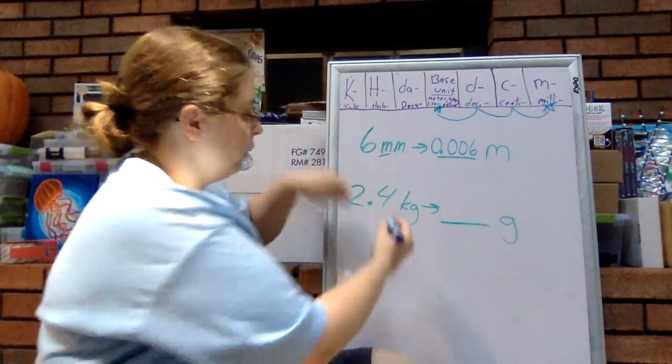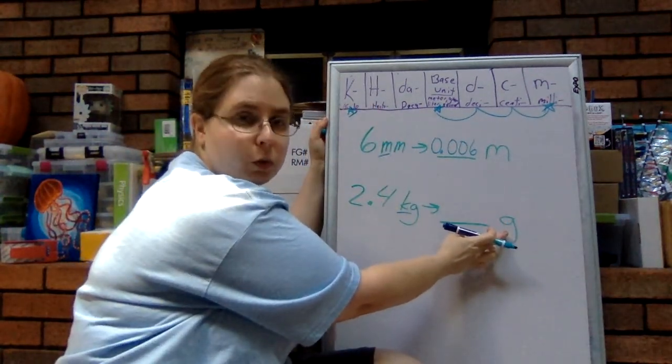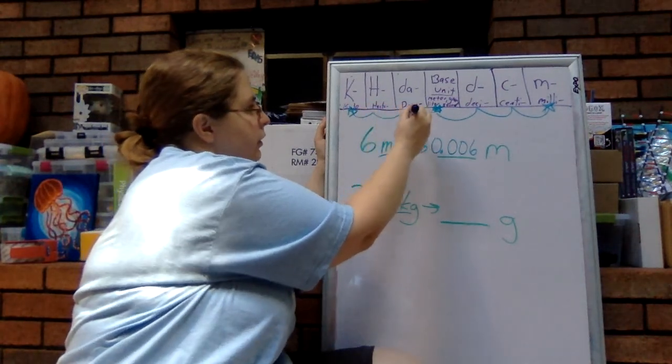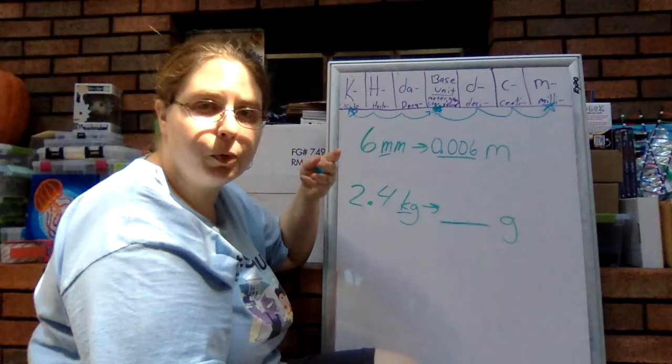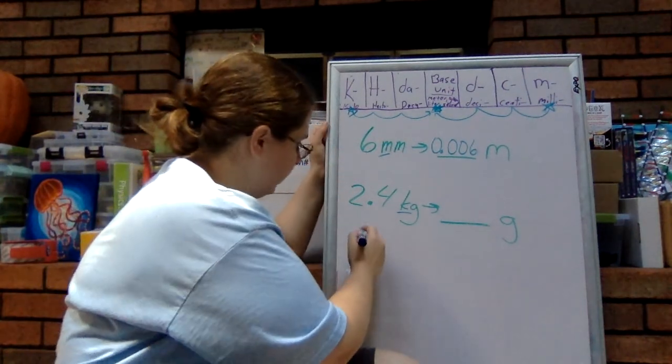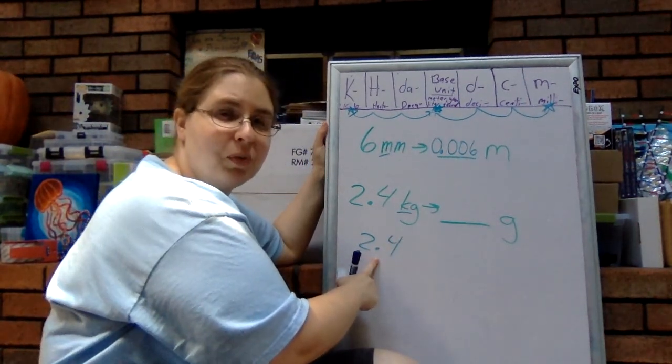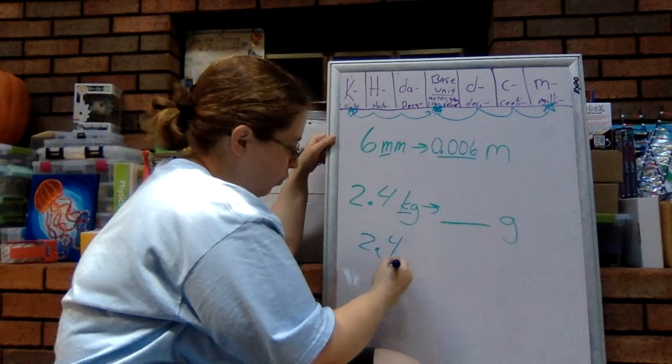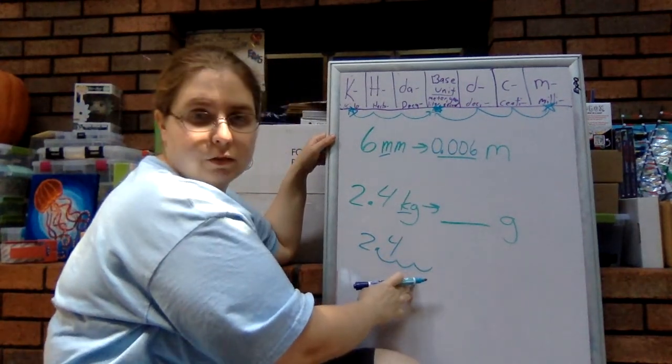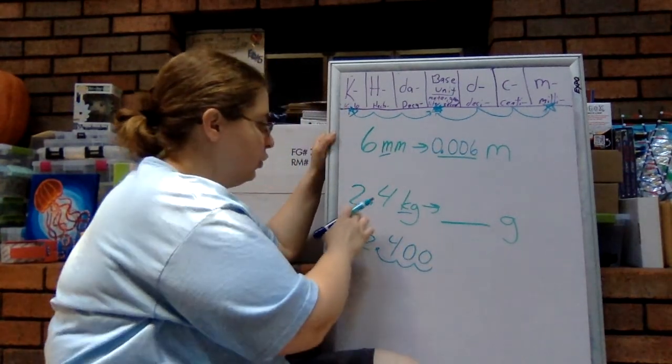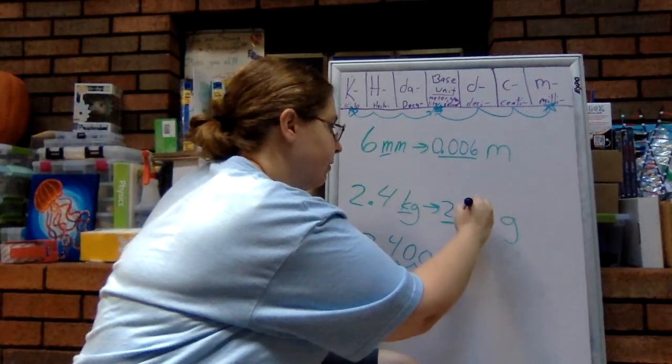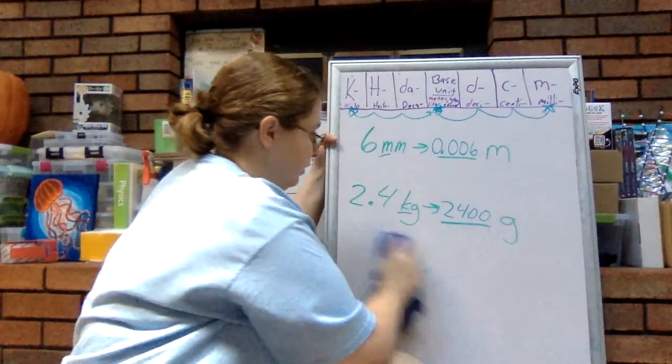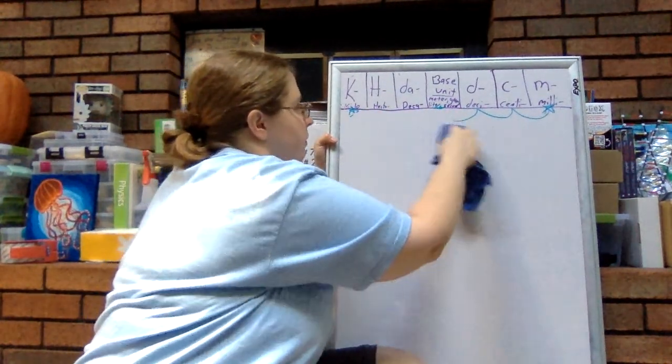Alright, let's do another one. I want to go from 2.4 kilograms to grams. So this time, I'm starting over here at kilo. And I want to end up one letter, no prefix, at my base unit. So what I have to do to get from here to here - one, two, three. I have to move my decimal point three places to the right this time. So 2.4, I can see my decimal point this time. So I take that, I'm going to move it three places to the right, just like we did up here. One, two, three. Fill in our zeros. So 2.4 kilograms is equal to 2,400 grams. Alright. Not too bad, right?